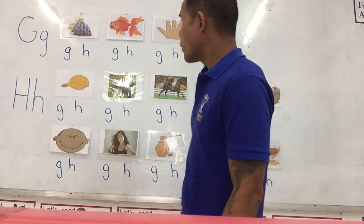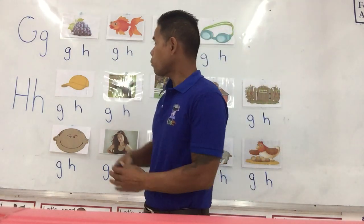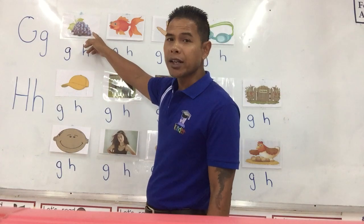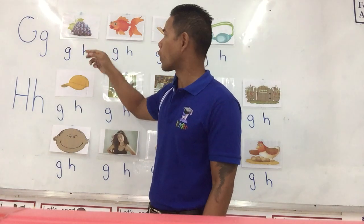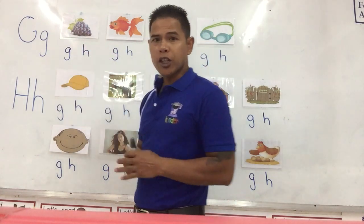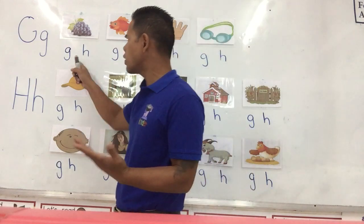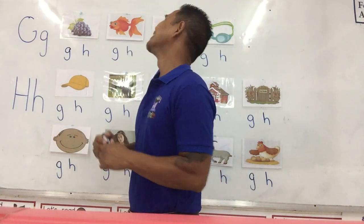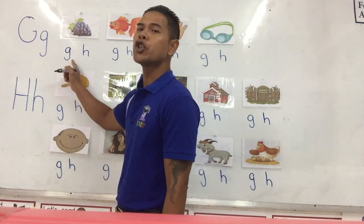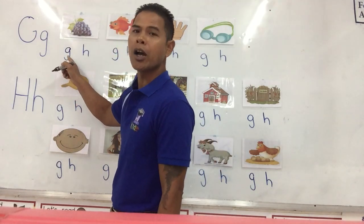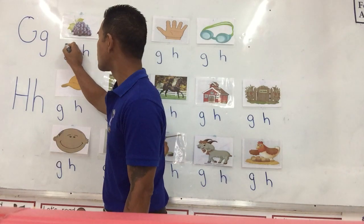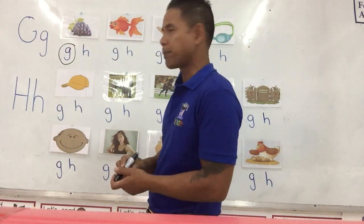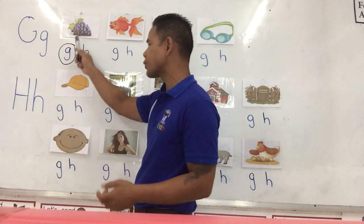Let's look up over here. The first one is a fruit — we call it a grape. Grape. So, does grape start with the letter G or the letter H? Guh. Grape. Yes, it is the letter G. G makes the guh sound. So we circle the letter G for grape. Grape starts with the letter G.